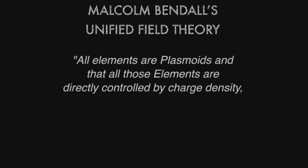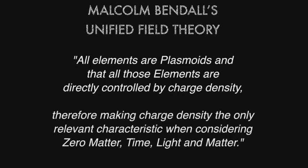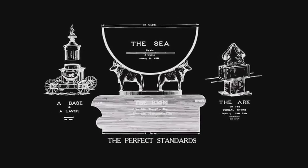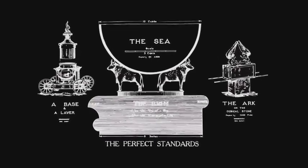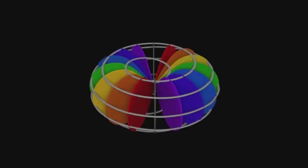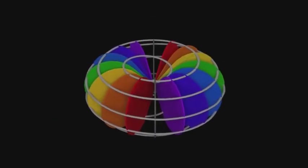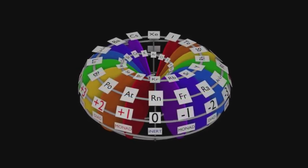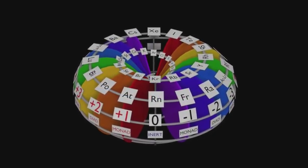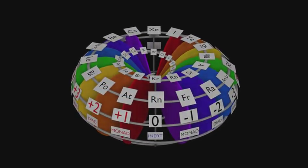The underlying principle of Malcolm Bendel's unified field theory is that all elements are plasmoids, and that all those elements are directly controlled by charge density, therefore making charge density the only relevant characteristic when considering zero matter, time, light, and matter. The implosive vortex waveguide is inspired by the Molten C. Vajra, based on Malcolm Bendel's scientific observations drawn from his Bendel torus. This led to his unified field theory, which is clearly illustrated by his model of the elements and his octave dimensional model.